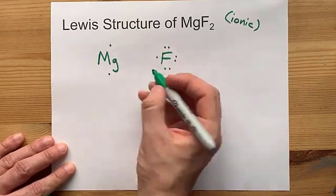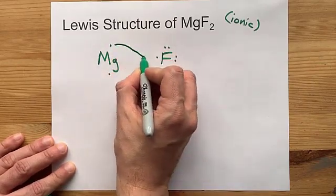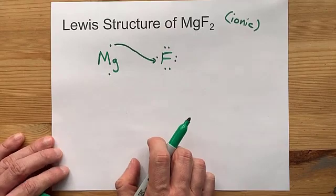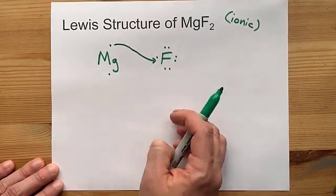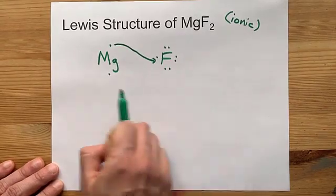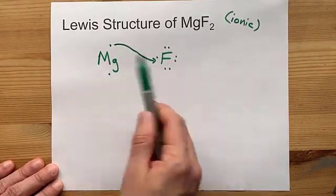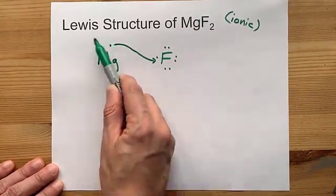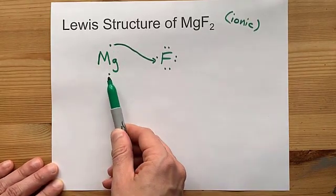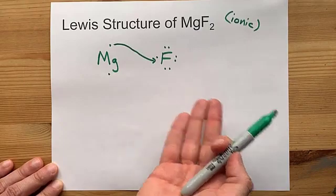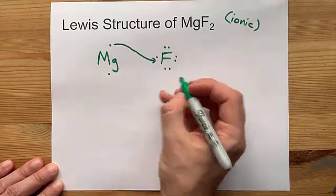Magnesium is a metal and is willing to give away an electron to a non-metal like fluorine. Now, fluorine has eight valence electrons. Great. Magnesium as a metal wants to give away all of its outer shell electrons, though, and it still has one. Where is it going to give that electron away to?